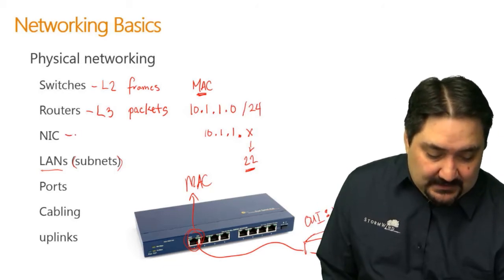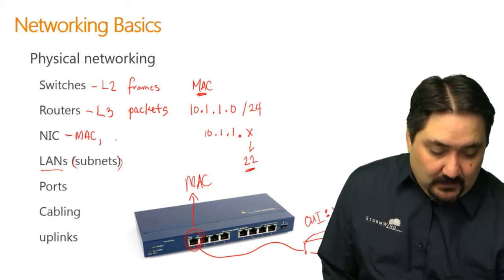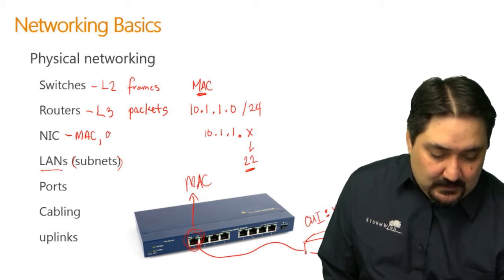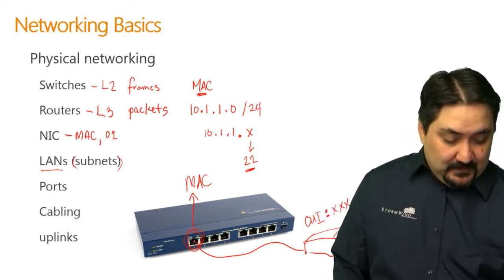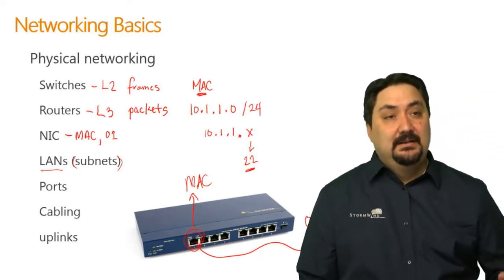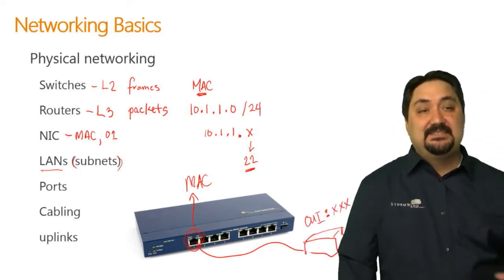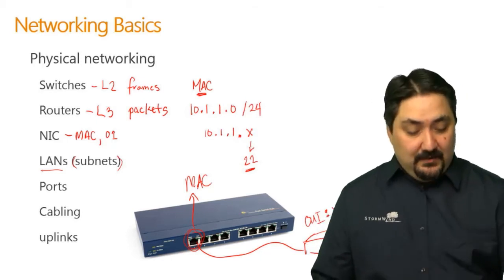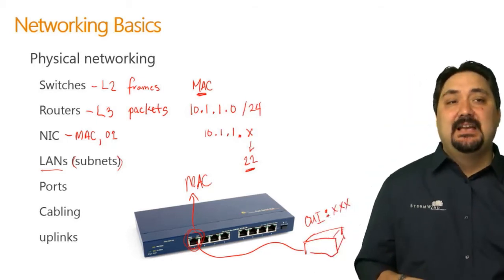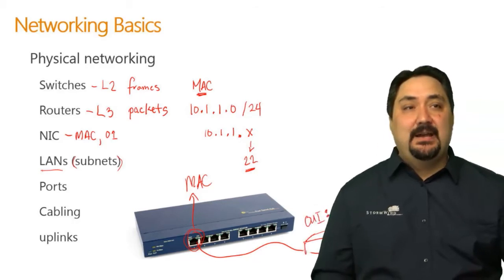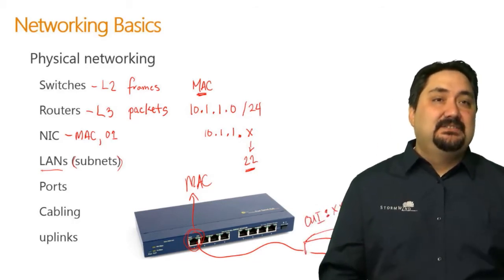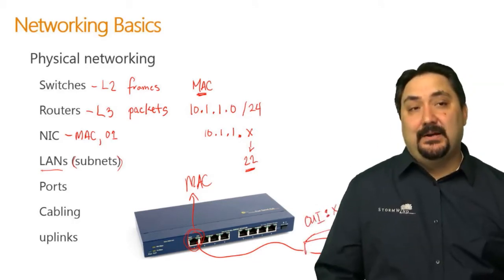Your NIC card contains your MAC address. It is also used to handle the zeros and ones — when we move traffic from a port over to our environment, it's zeros and ones. The NIC card reassembles those zeros and ones into a frame, takes a look at what's inside that frame, and then gives the data to the equipment if it's required.